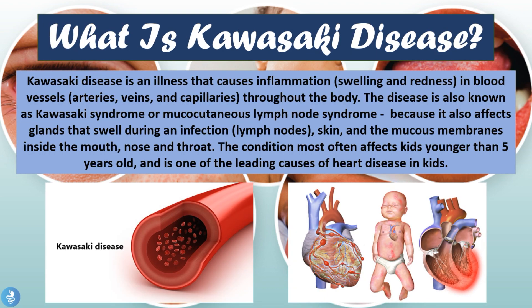Kawasaki disease is an illness that causes inflammation — meaning swelling and redness — in the blood vessels, which include the arteries, veins, and capillaries throughout the body. The disease is also known as Kawasaki syndrome or mucocutaneous lymph node syndrome because it also affects the lymph nodes, the skin, and the mucous membranes inside the mouth, nose, and throat. The condition most often affects kids younger than five years old and is one of the leading causes of heart disease in kids.